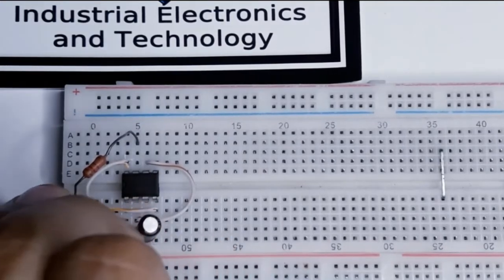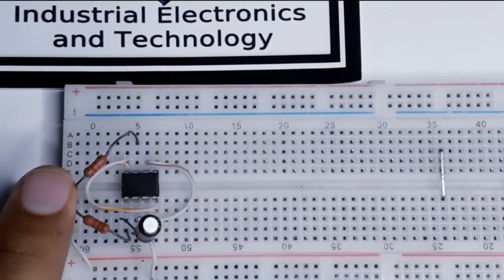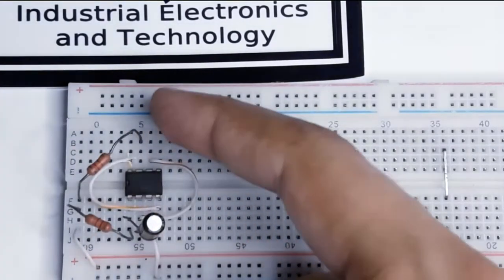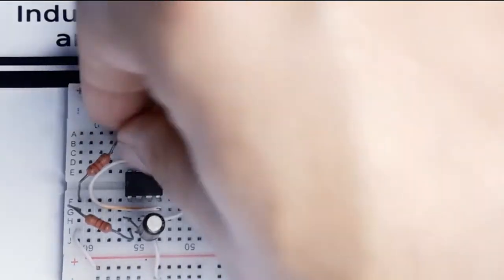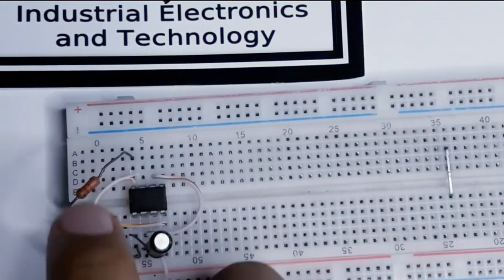These two points will be joined together. One end of the resistor will go to pin number one and the other will go to pin number eight.